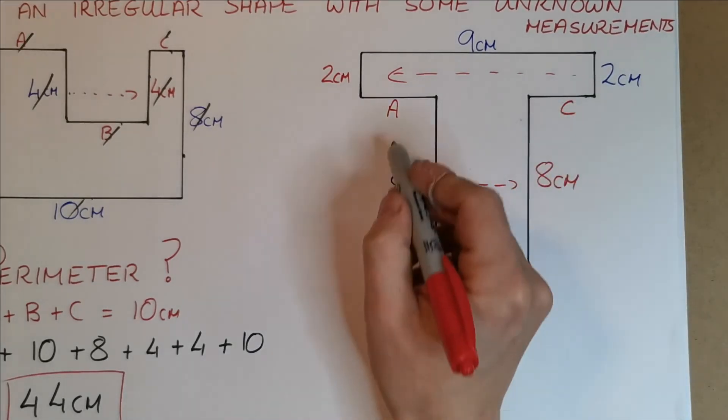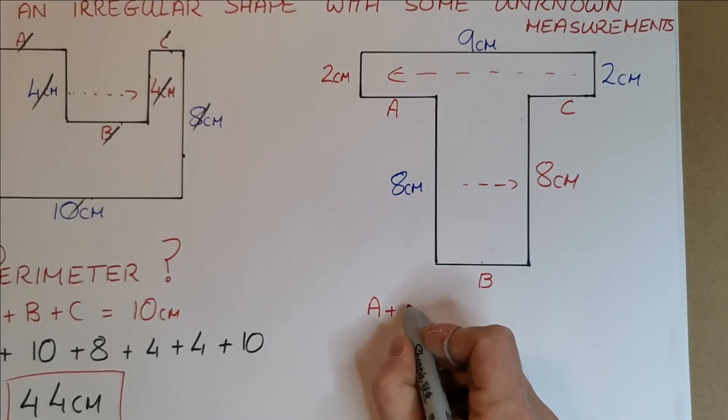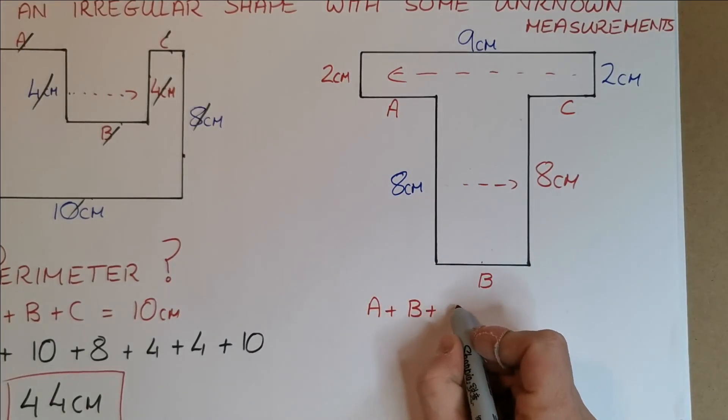But hopefully you can see that this now A, B, and C, they are equivalent to the long length across the top, which is 9cm.